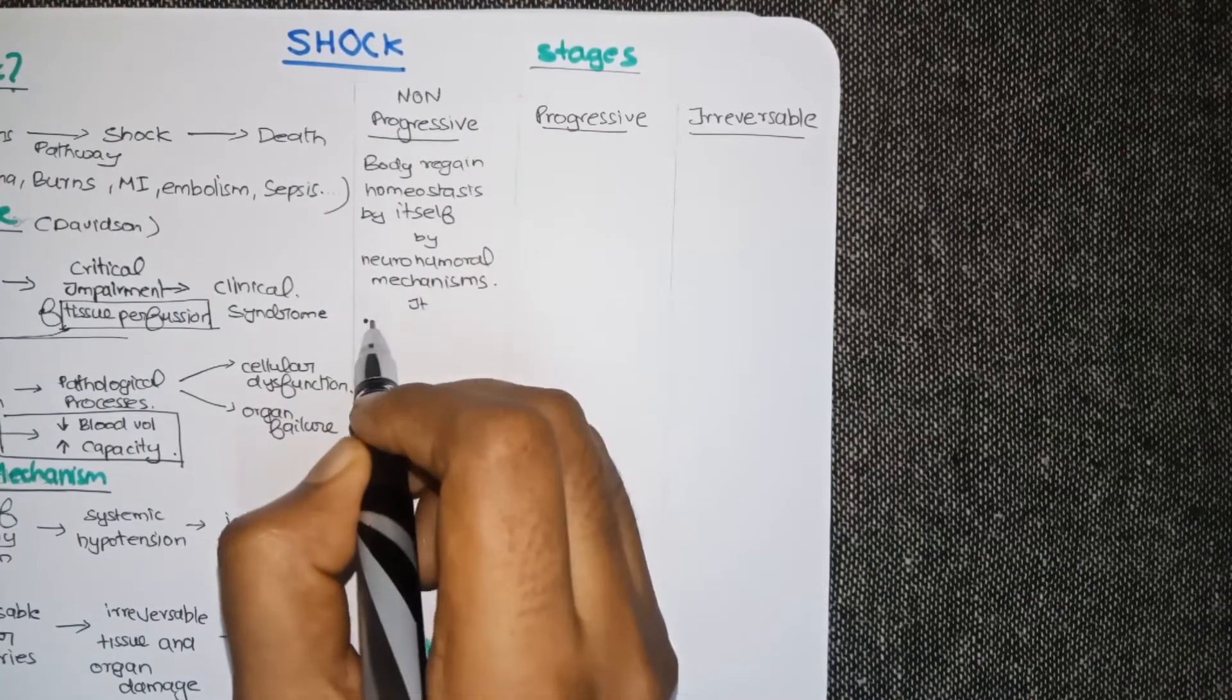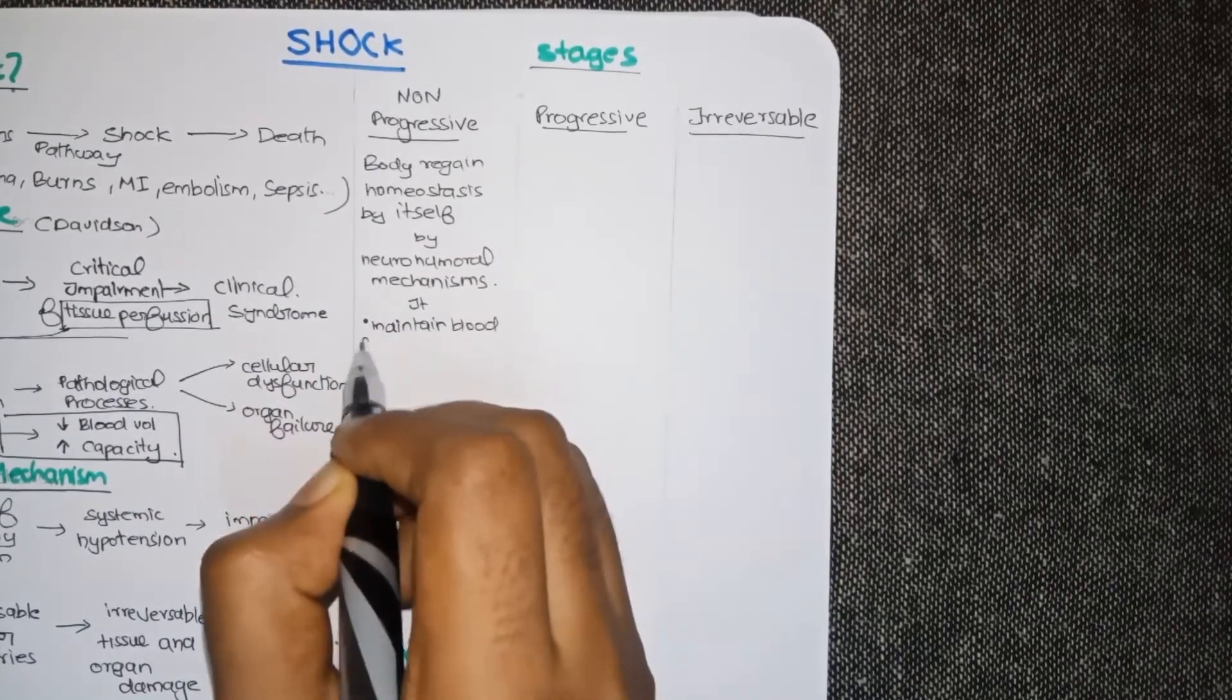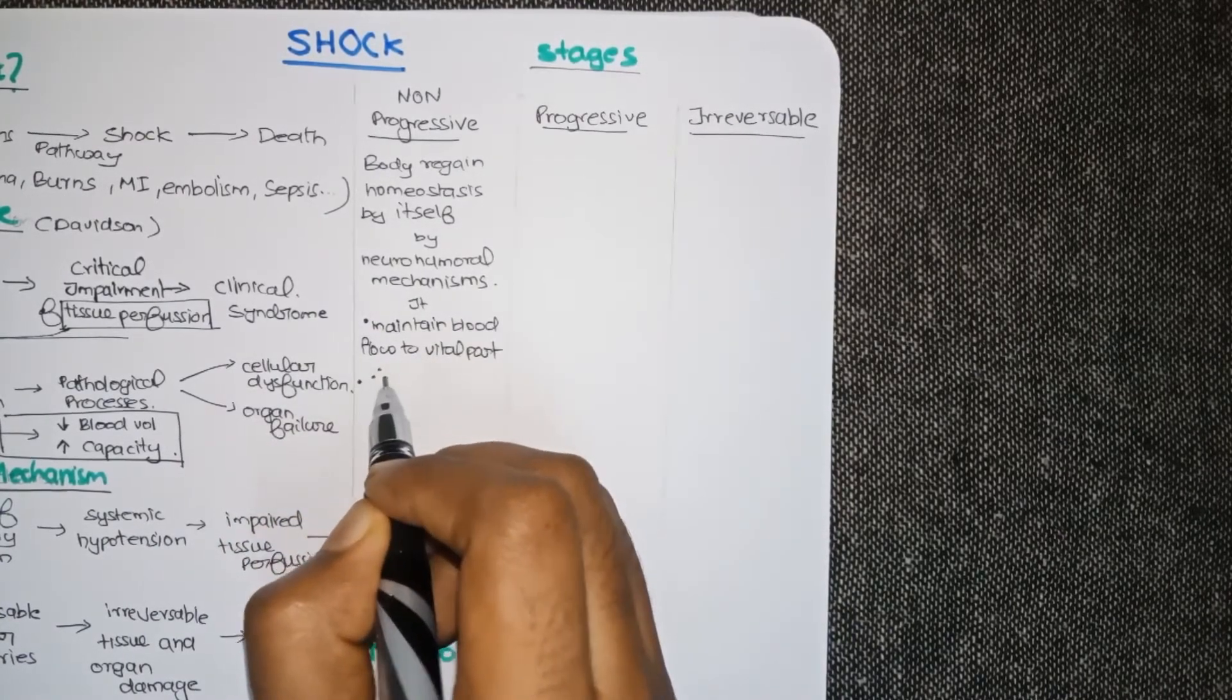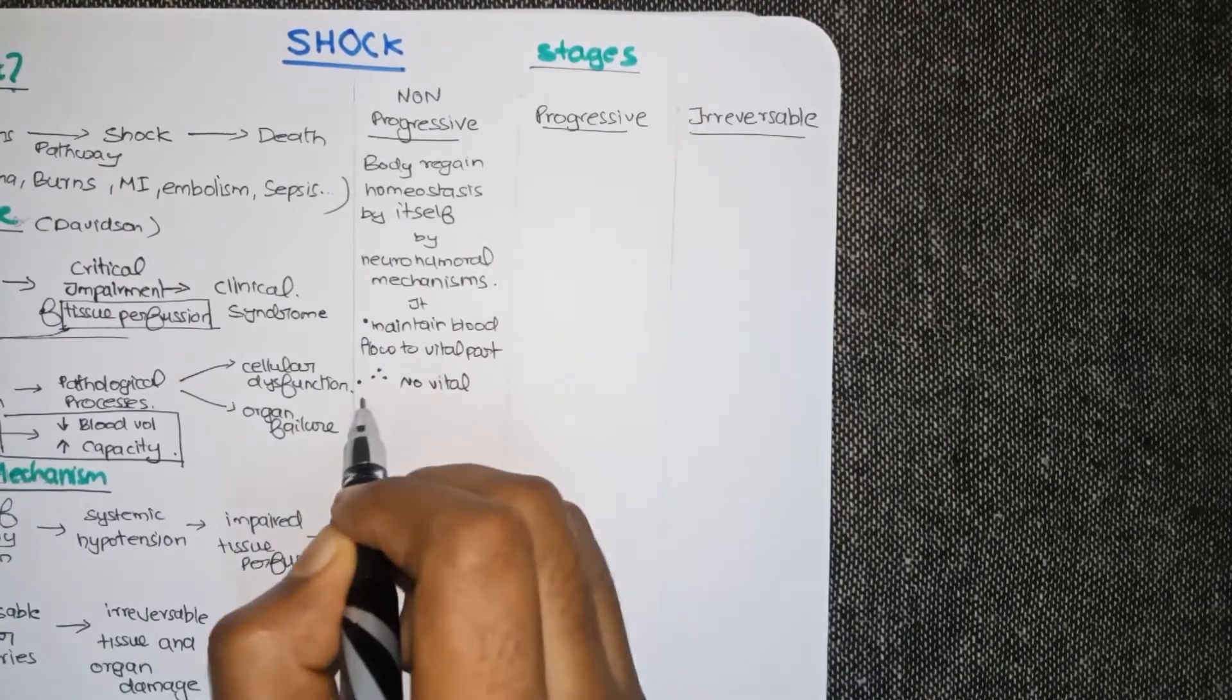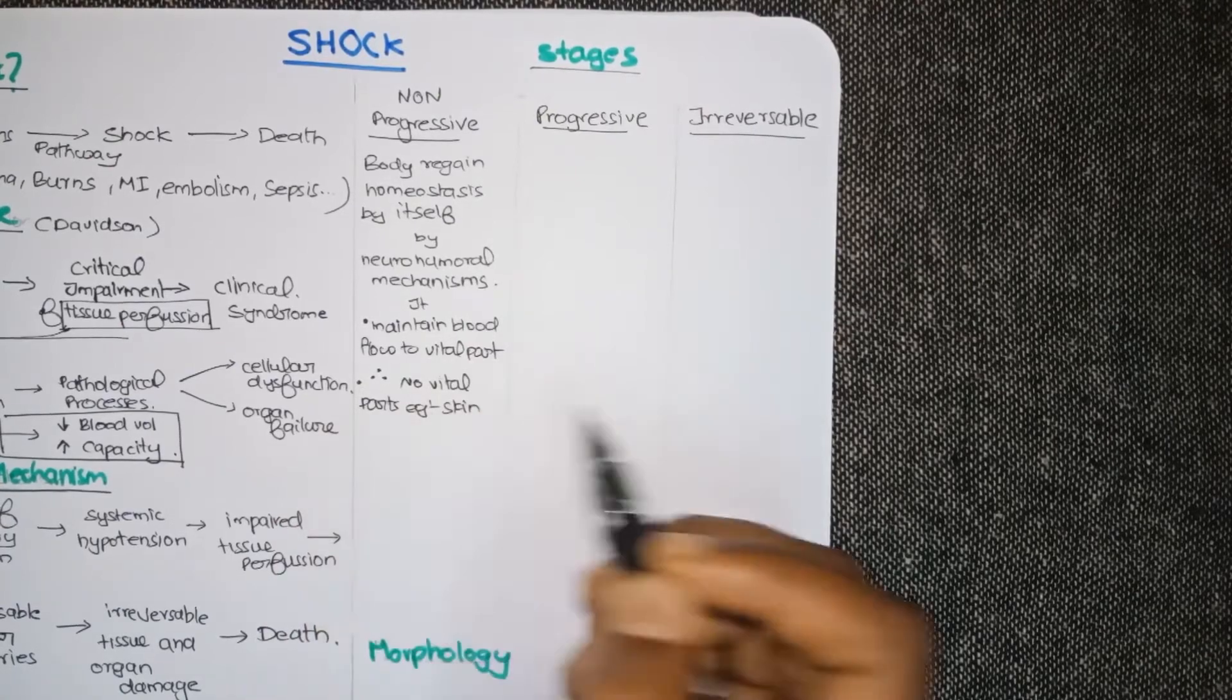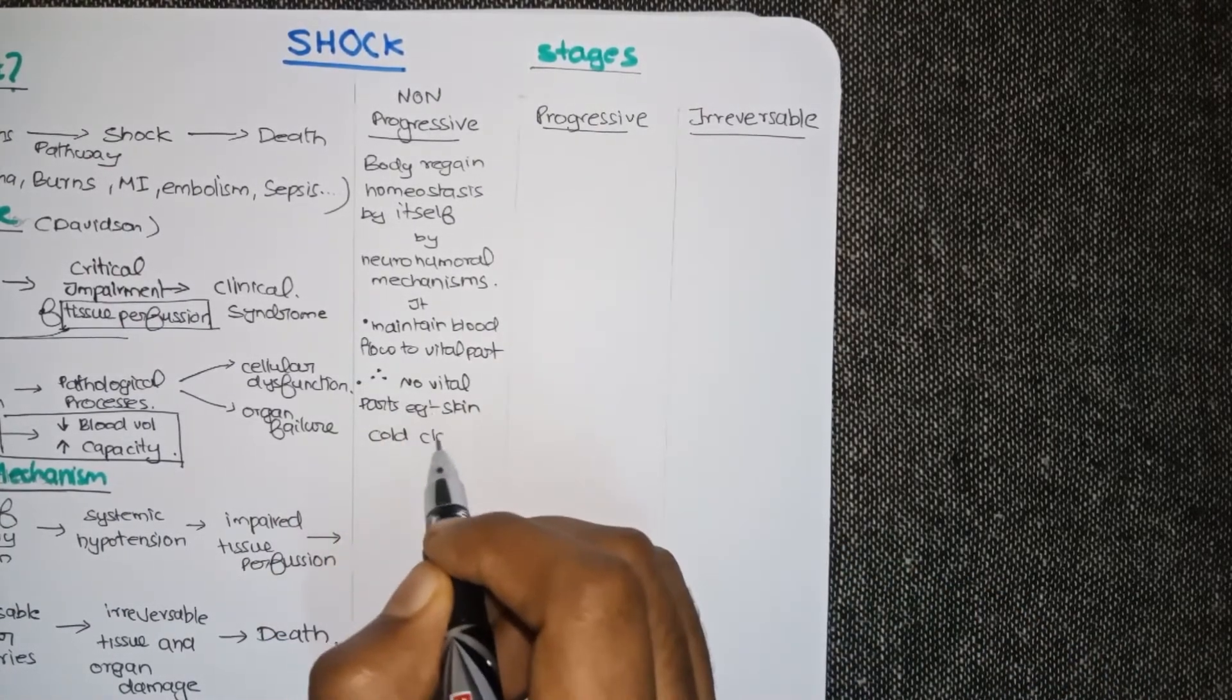So what is happening in this stage? The body tries to maintain the blood flow in the vital parts. So what happens to the non-vital parts? For example in the skin the blood flow decreases and as a result it becomes cold and clammy. That is why in shock the skin feels cold and clammy.